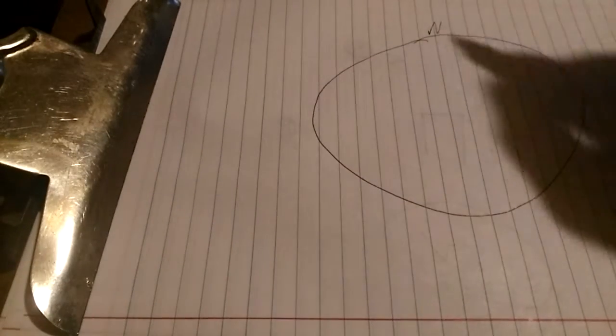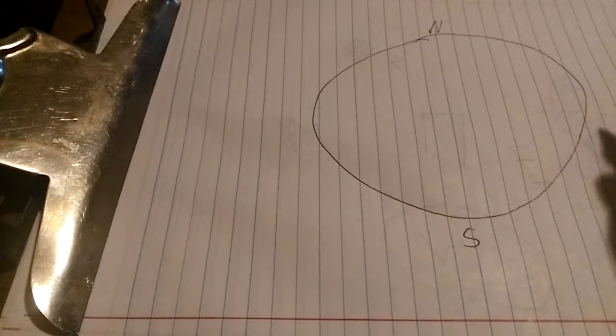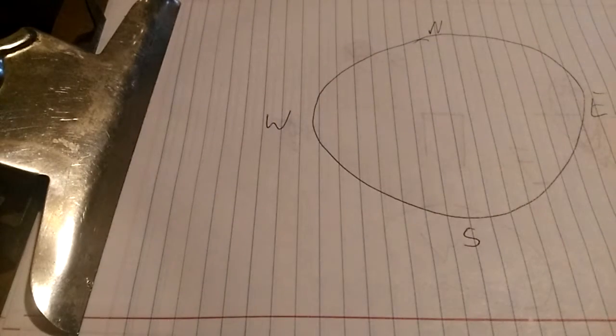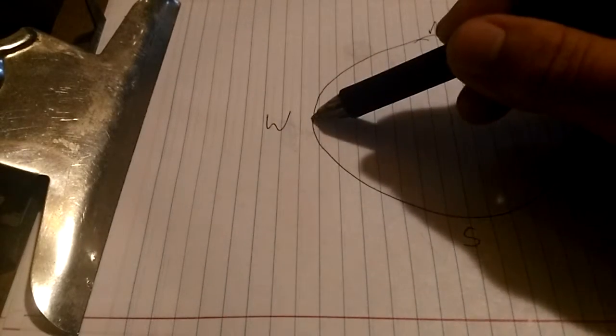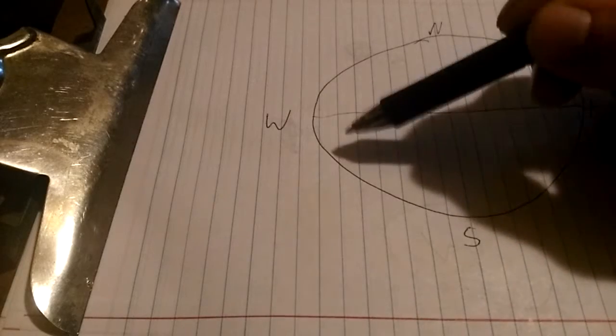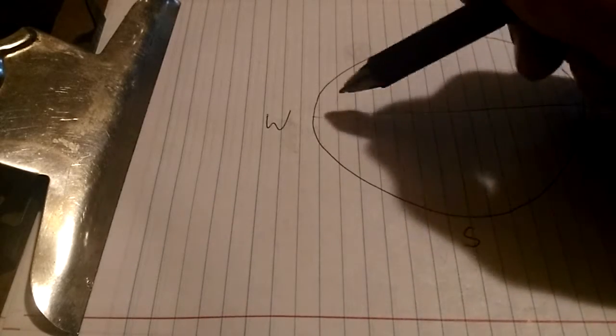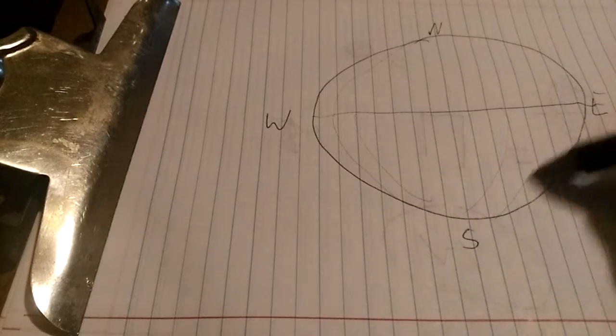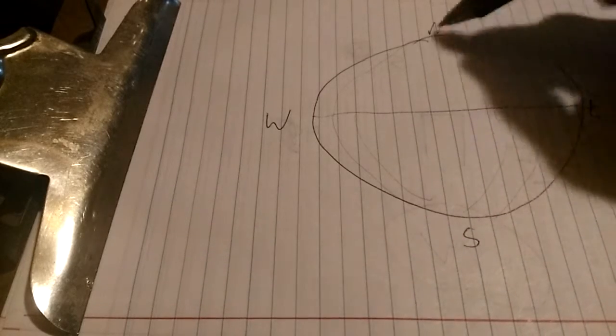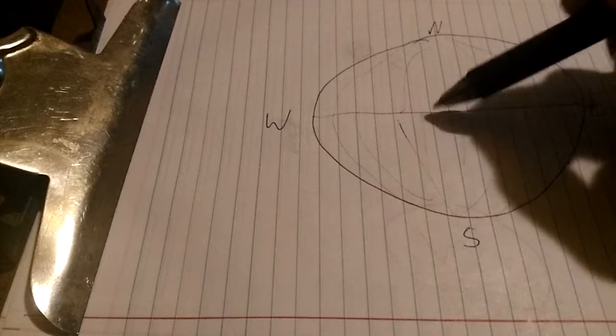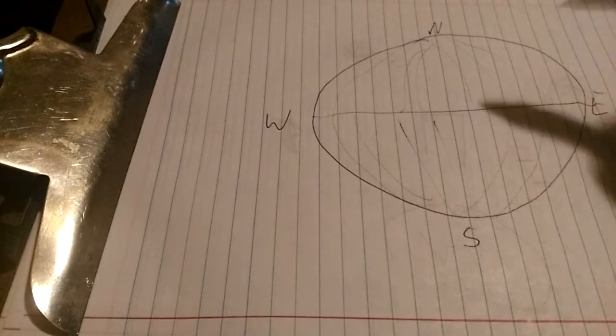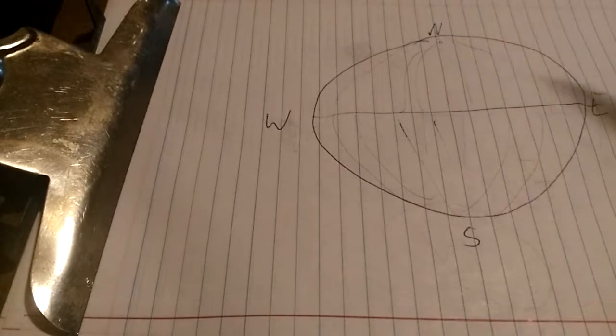Here is the Earth. Here is the North, South, East, West. Now, here is the equator, and you know, all these latitude lines. They all are going to, the compass is going to always point here.